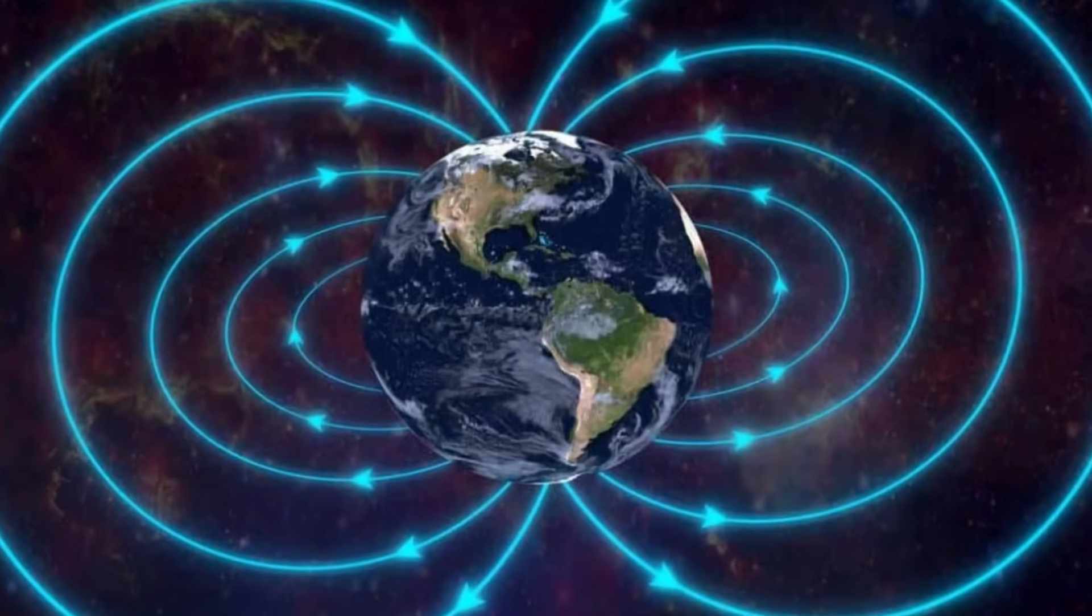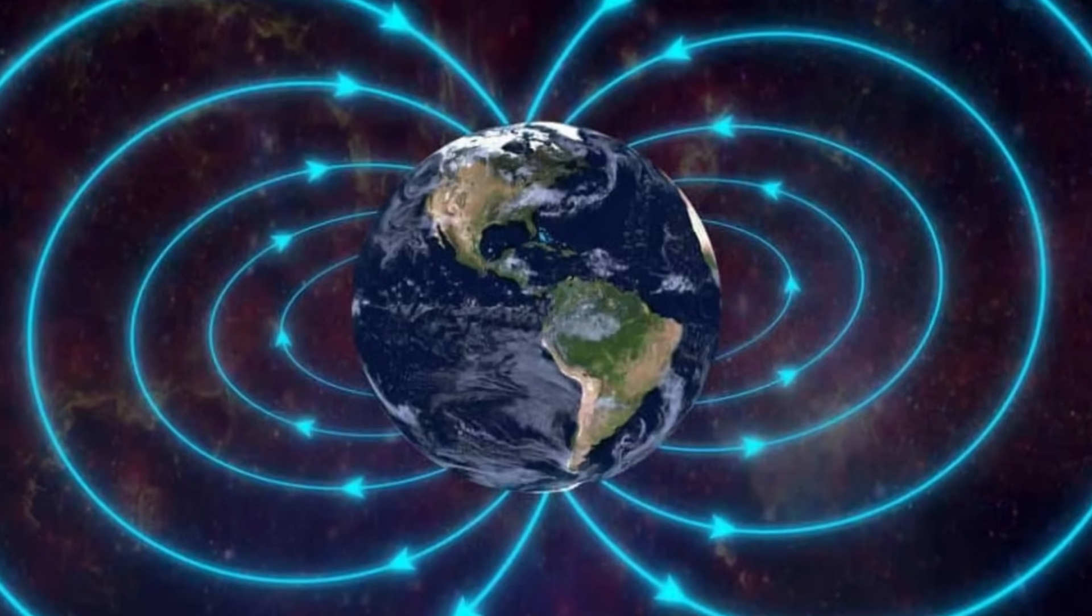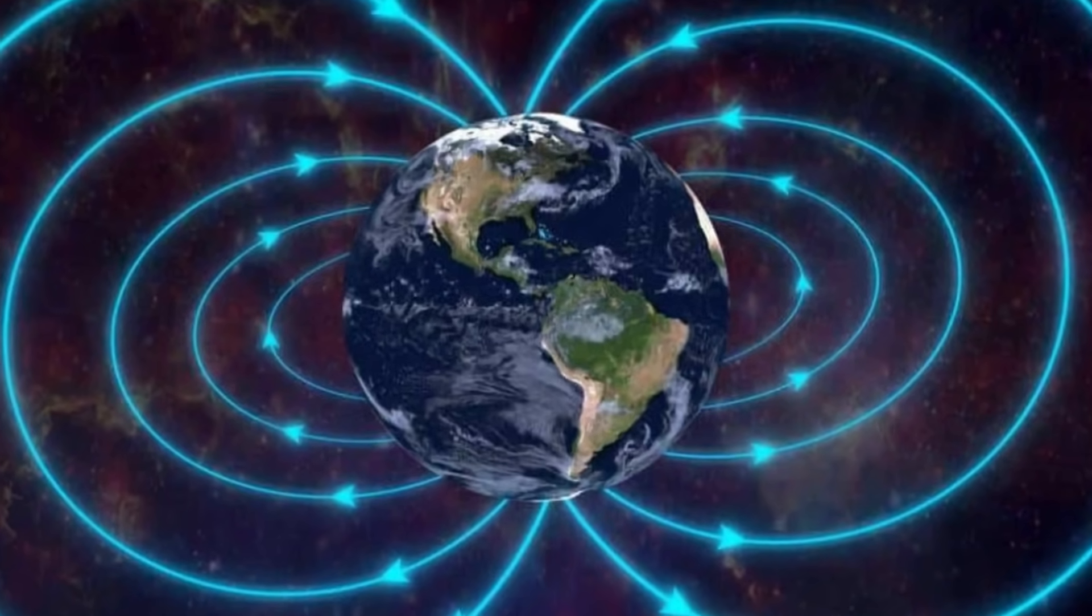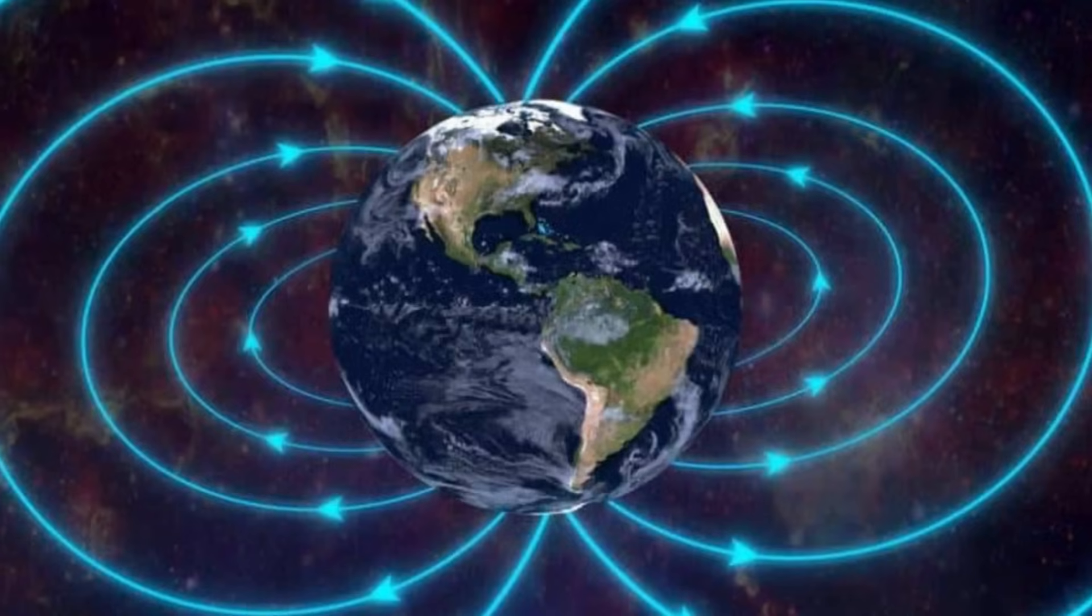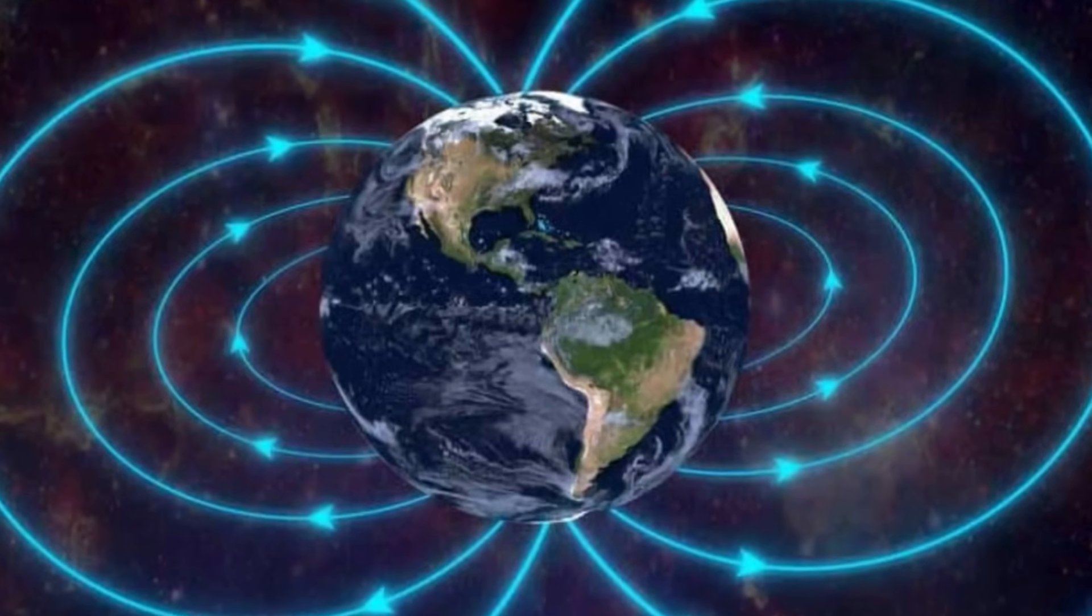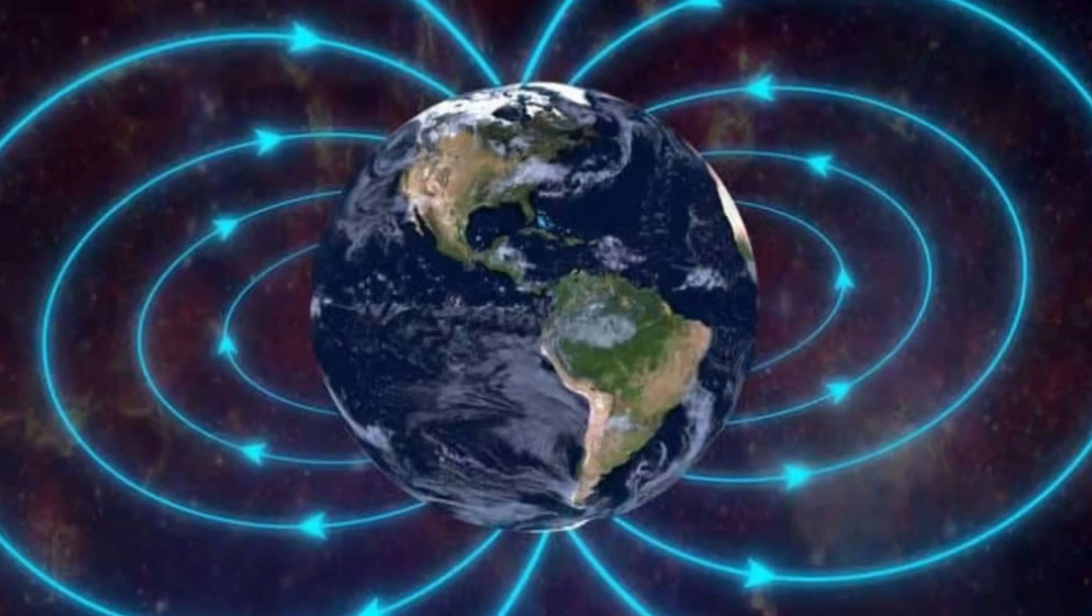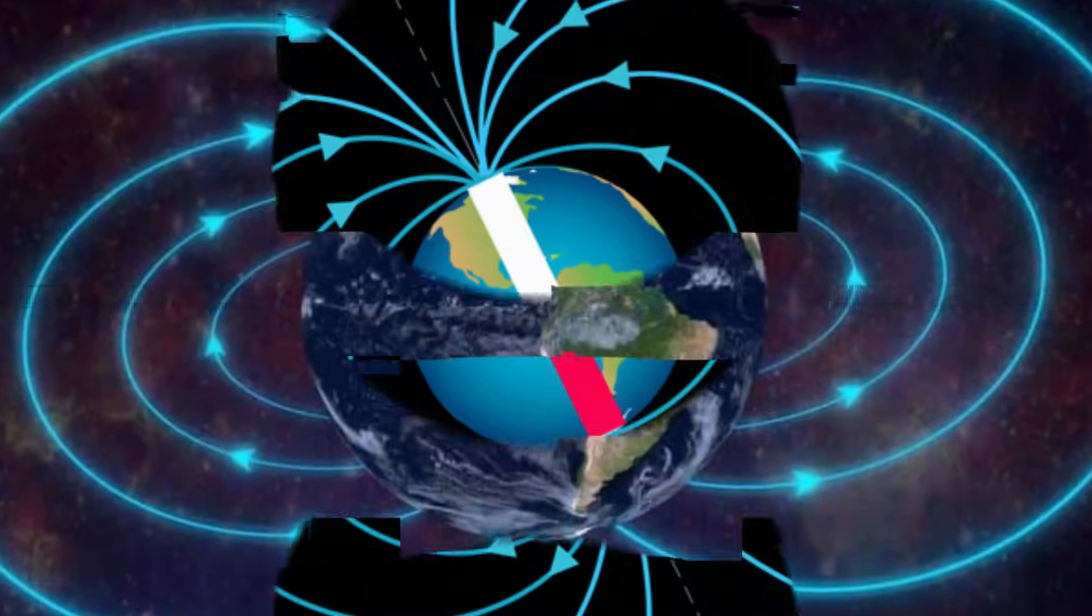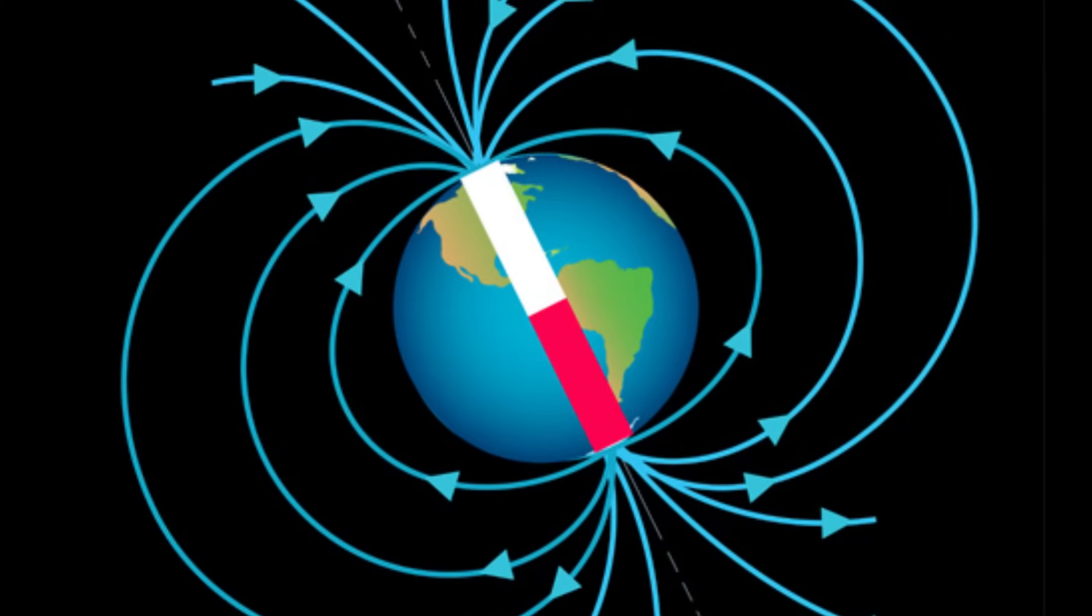However, it is not stable. Over the last 160 million years, the magnetic poles have reversed hundreds of times. The last complete reversal occurred about 780,000 years ago, leading some scientists to assert that we are overdue for the next change.